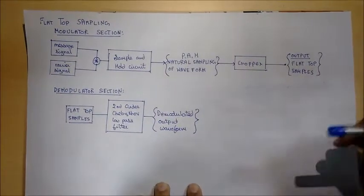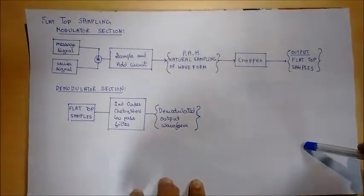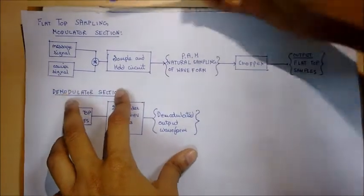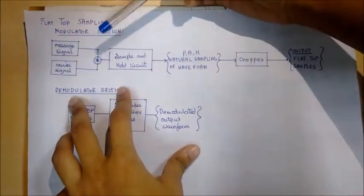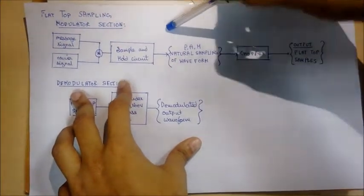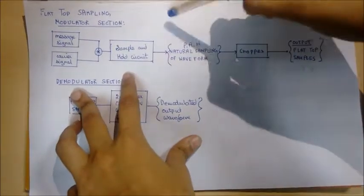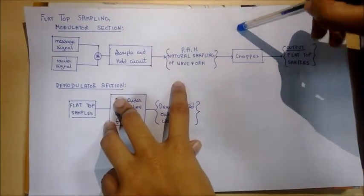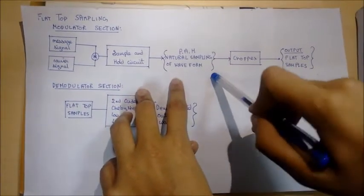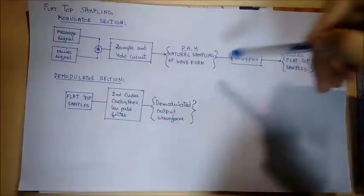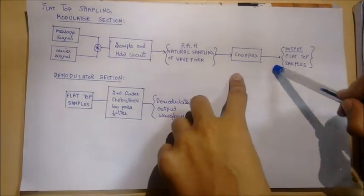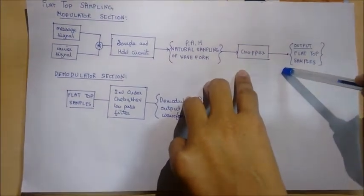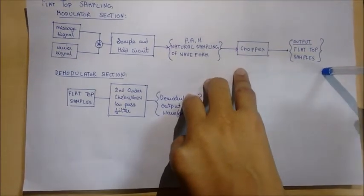Hello guys and welcome to our flat-top sampling experiment. This is the modulator section of the flat-top sampling experiment — this is the block diagram. We will be multiplying a message signal and a carrier signal, and the output waveform will be propagated through a sample-and-hold circuit. The sample-and-hold circuit will give us the pulse amplitude modulation, which is the natural sampling of the output waveform. The output waveform will then be propagated through the chopper section of the circuit, which will even out the amplitudes, and we will finally get our flat-top samples as the output.